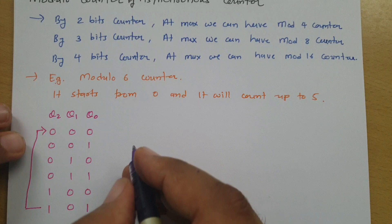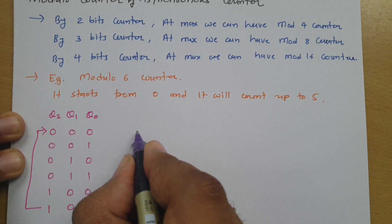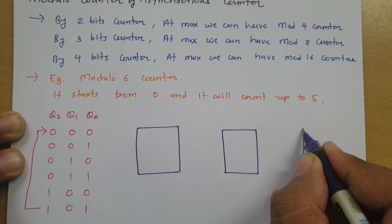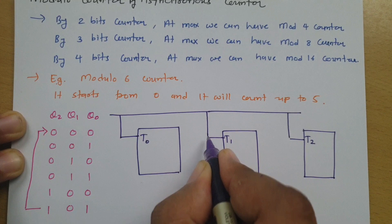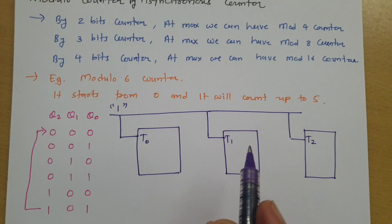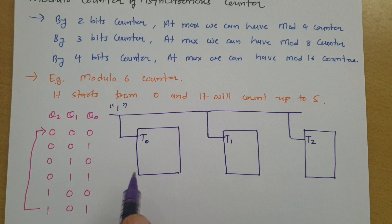For this design, I'll be using three memory elements — specifically T flip-flops — since we have three bits. For simplicity, all three T flip-flop inputs will be connected to logic one. This means the outputs will toggle after each clock trigger.